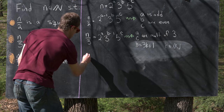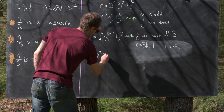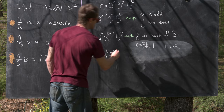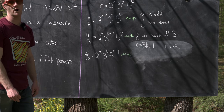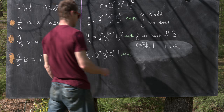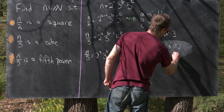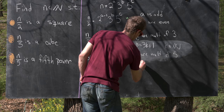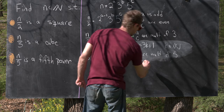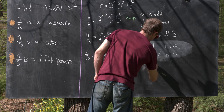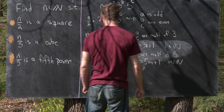Now let's play the game one more time. We've got n over five equals two to the a, three to the b, five to the c minus one. For this to be a perfect fifth power, a and b are multiples of five, and c minus one is also a multiple of five, which means c is one more than a multiple of five. We can write c as five times m plus one for some natural number m.